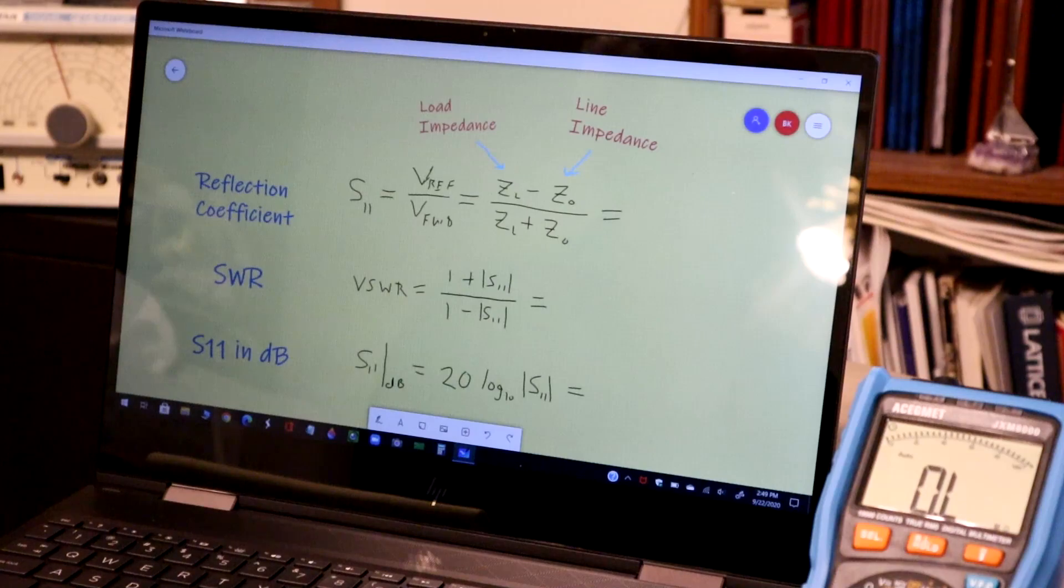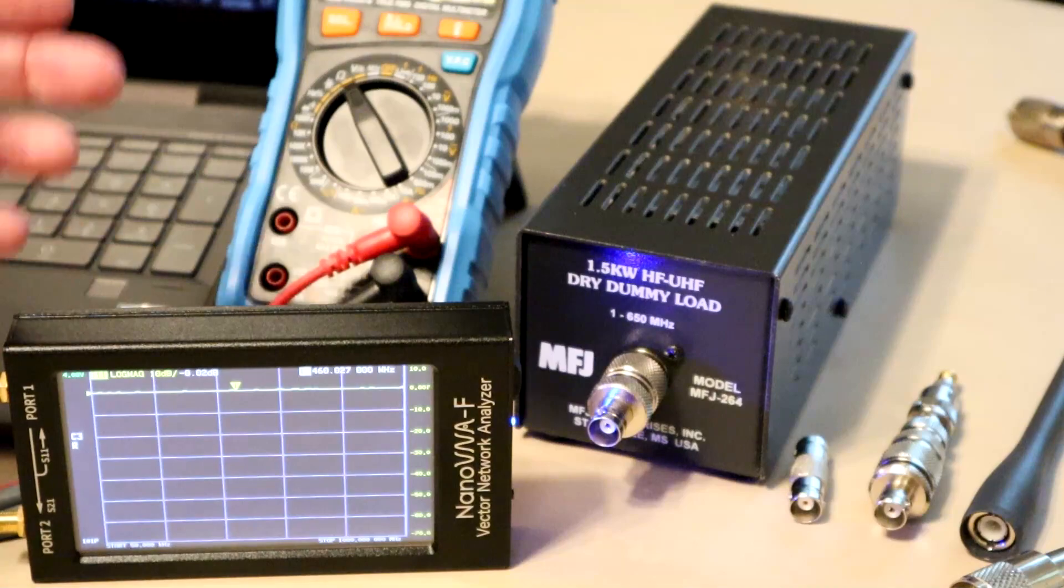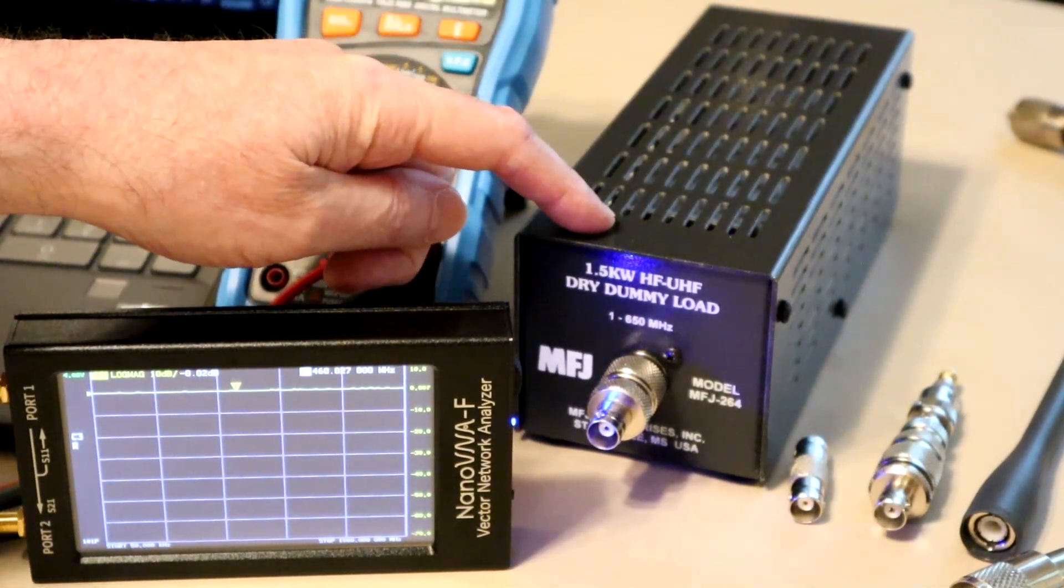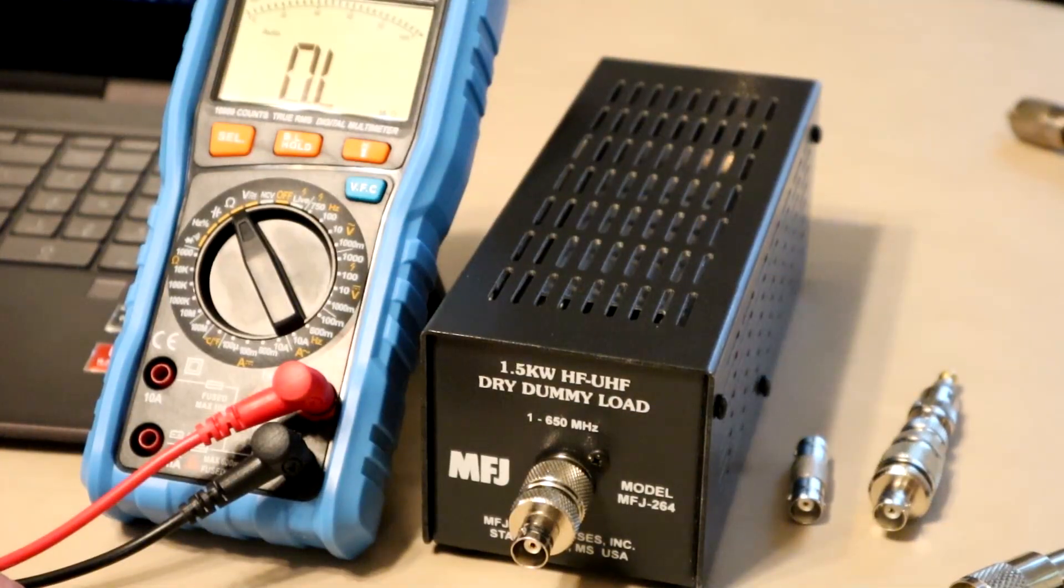We're going to take some measurements and crunch a few numbers with these formulas. But our main focus is going to be on using the nano VNA to look at this MFJ dummy load. So let's get to it.